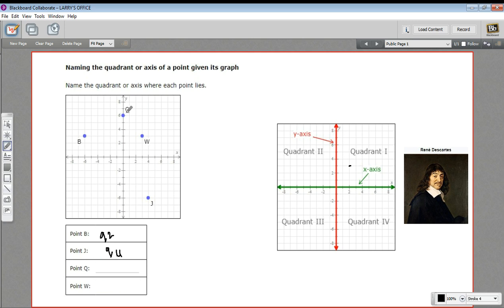And then point Q, it's on an axis. So it's not really in one quadrant or the other. It's right on this axis. And this one, this vertical line that goes up and down, this is the y-axis. So point Q is on the y-axis.